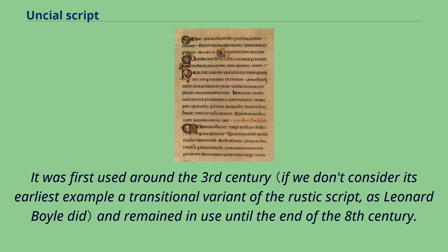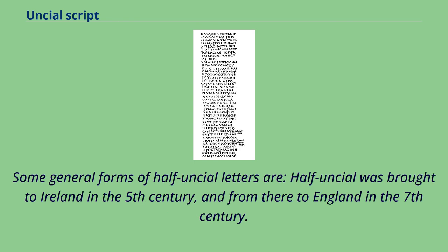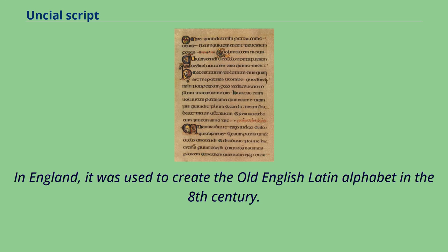Semi-uncial was first used around the 3rd century and remained in use until the end of the 8th century. The early forms of half-uncial were used for pagan authors and Roman legal writing, while in the 6th century the script came to be used in Africa and Europe to transcribe Christian texts. Half-uncial was brought to Ireland in the 5th century, and from there to England in the 7th century, where it was used to create the Old English Latin alphabet in the 8th century.